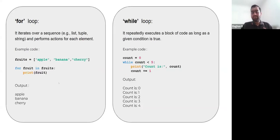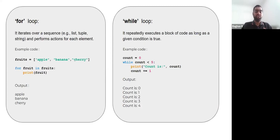Moving on to loops — looping is basically iterating a block of code again and again until some condition is met. In this example, we iterate through a list of fruits. We iterate to every element until we reach the end, printing each fruit. This is one way to iterate through a list: for a variable in fruits, you print that variable, and you will be printing apple, banana, and cherry.